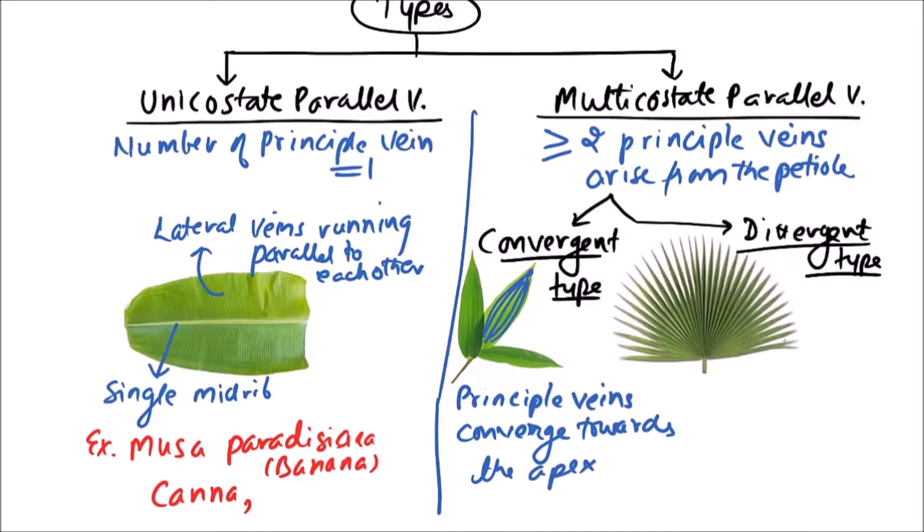While in case of divergent type, the principal veins diverge to the margins.